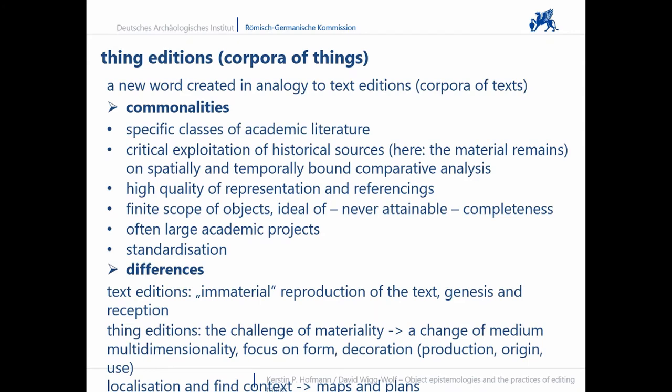They are the attempt to describe and analyze knowledge about things, the conceptualizing inherent in this knowledge and the relationship between such knowledge and epistemic or scientific practices. As a specific class of academic literature, thing editions are the result of specific object epistemologies practiced by scholars. The aim of archaeological editions is to study historical sources critically and, by publishing them, to improve access to them for a wider circle of researchers. This is particularly relevant for things, as they are frequently poorly accessible, fragile, often stored in different places, but not transportable. Editions enable researchers to compare and evaluate objects regardless of when and where they are.